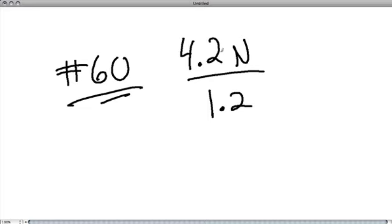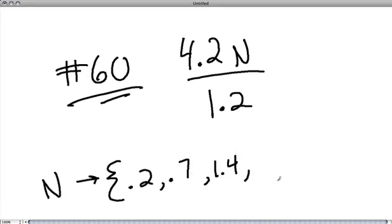We have 4.2 times N over 1.2. They're telling us that the number N is an element of, which means it's part of this group - it's one of these members: 0.2, 0.7, 1.4, 2, or 7. This is called a set, and sets have a bunch of elements or items in it.